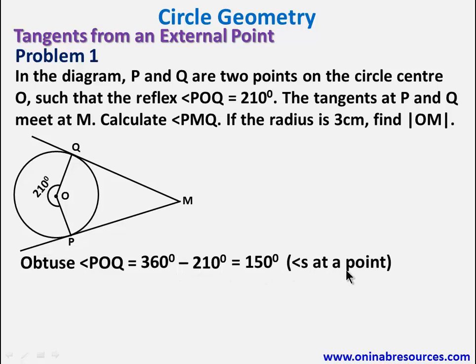The reason being angles at a point. Then we go ahead to see that angle OPM is equal to OQM. POQM is a kite. Since this is 90 degrees, this is 90 degrees. So that will give us 90 degrees because OP, which is a radius, is perpendicular to PM.